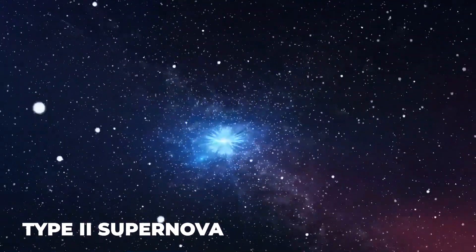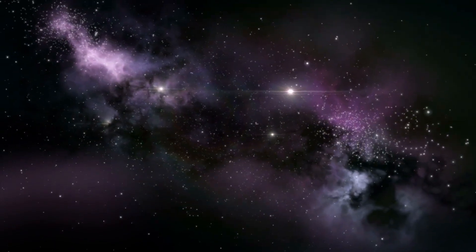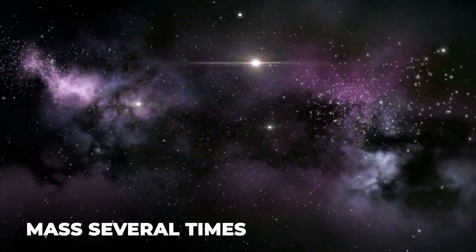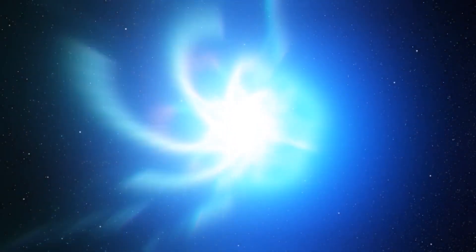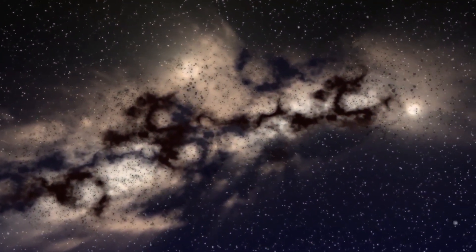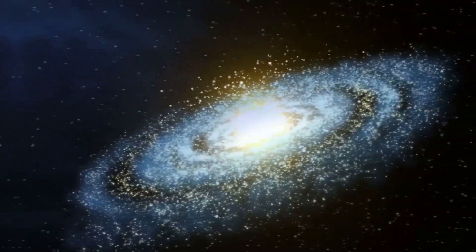Type 2 supernovae. To explode as a Type 2 supernova, a star must have mass several times that of our sun. Estimates range from 8 to 15 solar masses. Similar to the sun, it will eventually run out of fuel at its core, first hydrogen and then helium. However, there will be enough mass and pressure to fuse carbon.